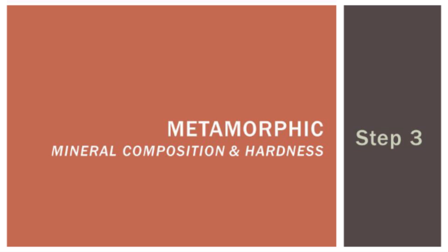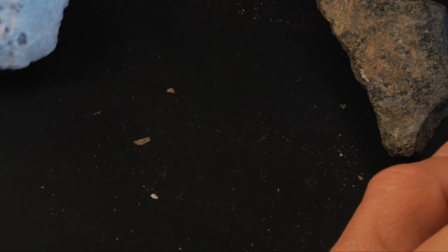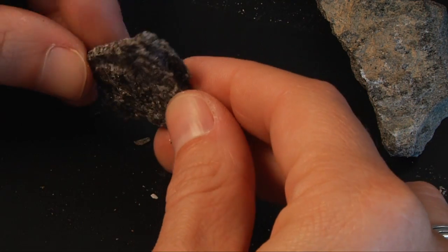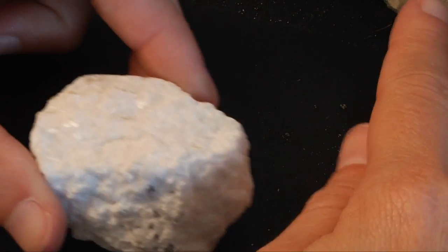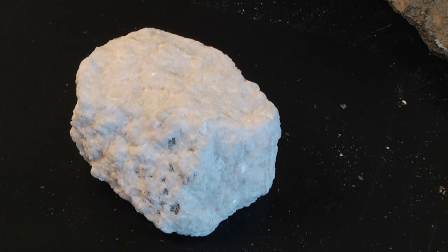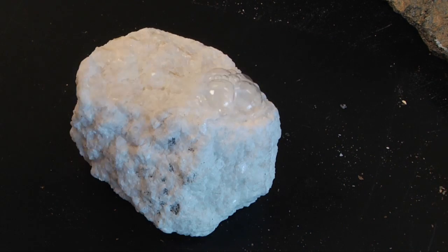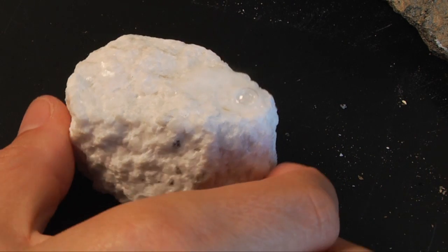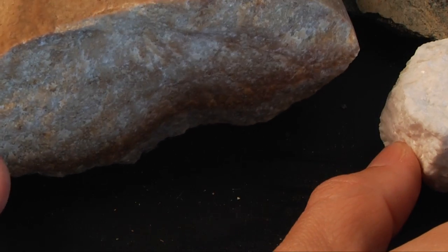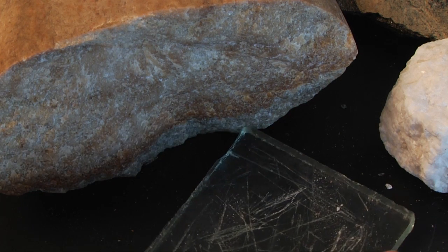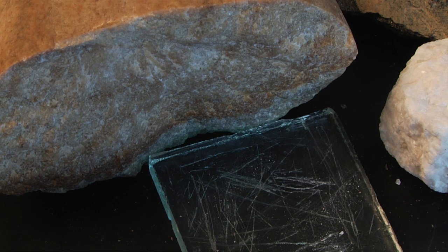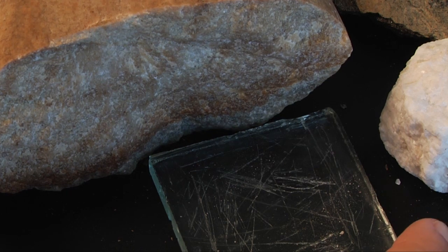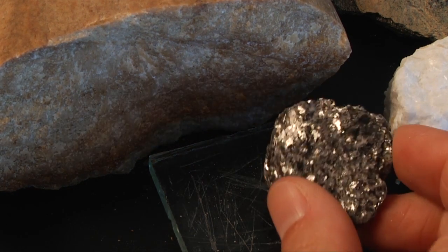The next step is to look at the mineral composition. You're going to have samples that might have micas that stack up on top of each other — nice thin flat sheets. In some cases you'll have ones that react to acid, which will be your calcite fizzing, so you know you've got calcite present in that metamorphic rock. If a sample scratches the glass plate like you did with sedimentary rocks, you know you have quartz present. You can also have potassium feldspar present, giving a whitish color. Amphibole can be present too, but pretty rare — most of the time you're going to see micas.